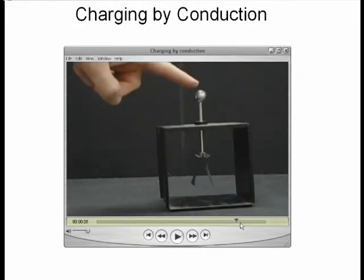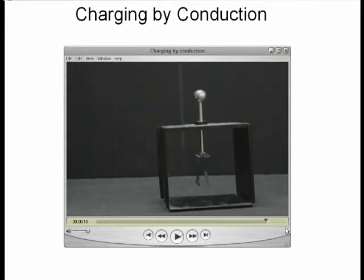Once I touch it, grounding the electroscope will draw off the electric charge and it goes back to being neutral again.